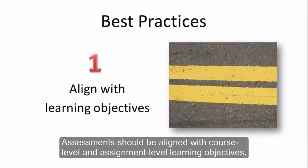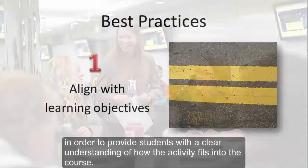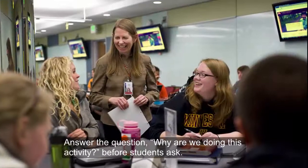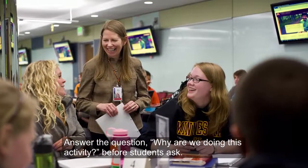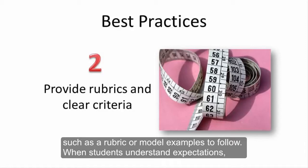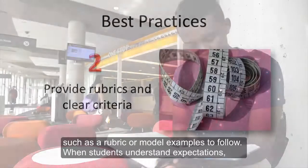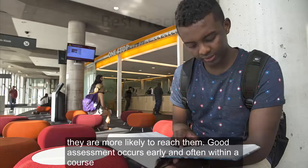Assessments should be aligned with course-level and assignment-level learning objectives in order to provide students with a clear understanding of how the activity fits into the course. Answer the question, "Why are we doing this activity?" before students ask. Provide students with clear and specific information about how work will be evaluated and scored, such as a rubric or model examples to follow. When students understand expectations, they are more likely to reach them.